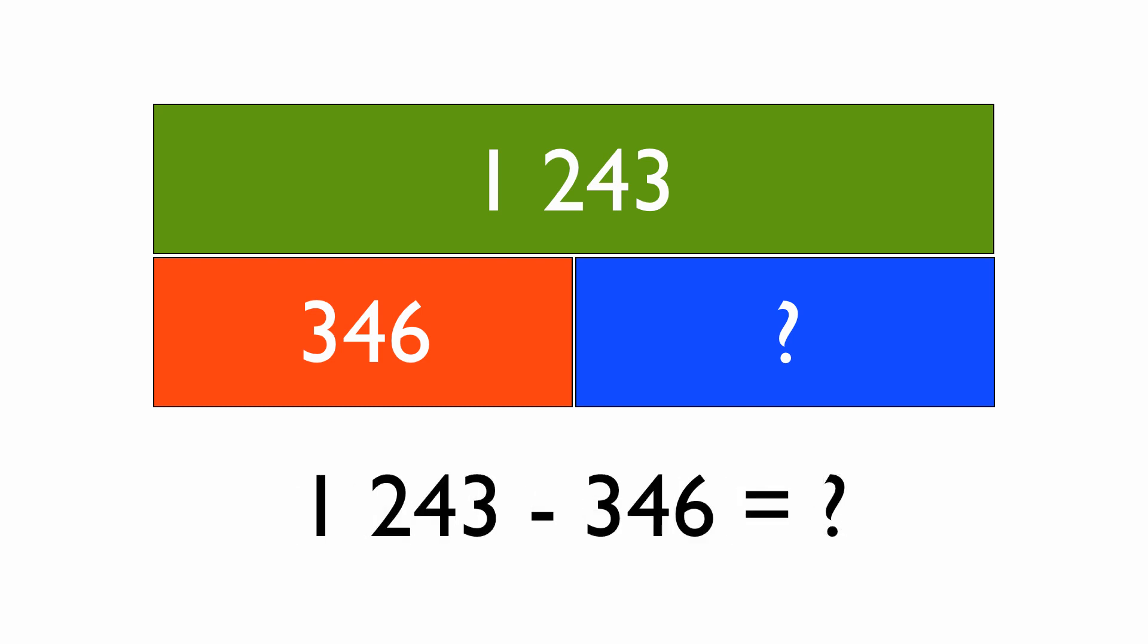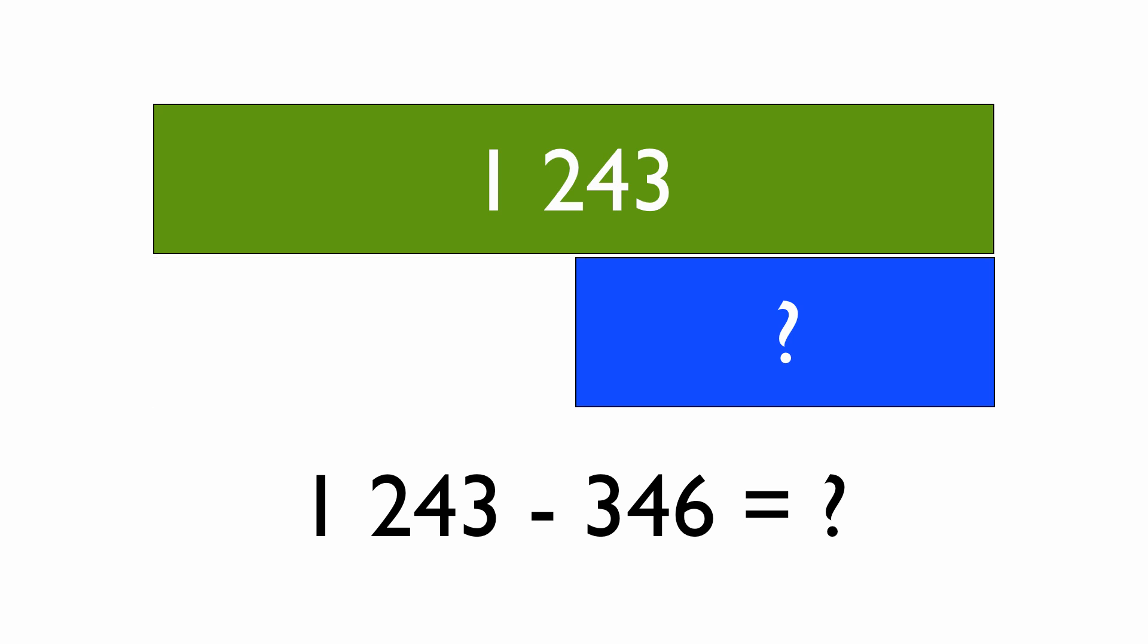By turning it into a take away sum, I put the question mark at the end, which is where I want the question mark to be. I can take away the 346 and that'll leave me with the bit that I'm looking for, the question mark.